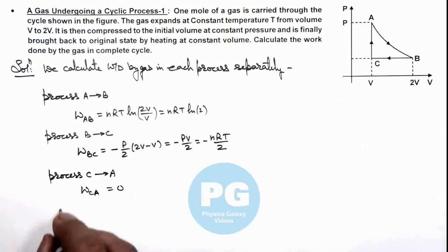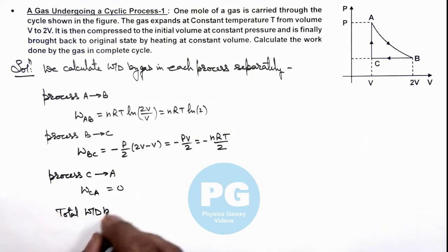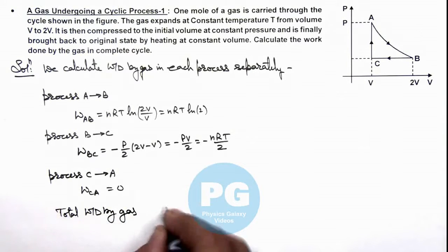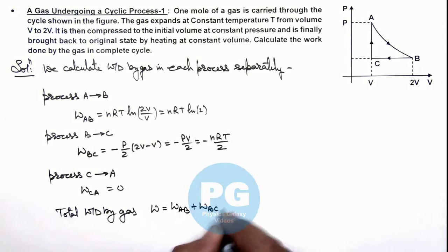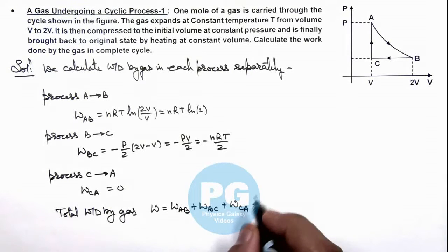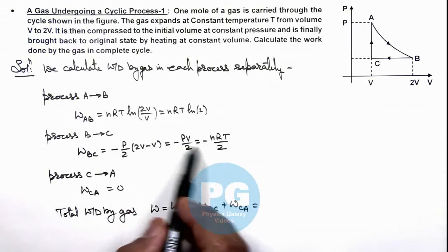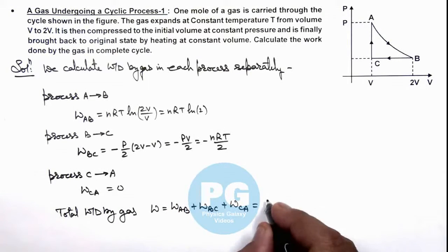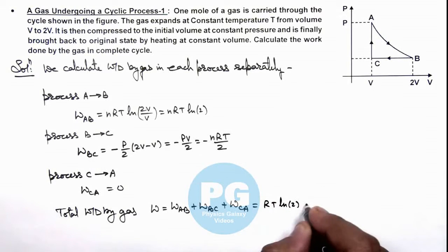The total work done by the gas can be given as W_AB plus W_BC plus W_CA. Since the number of moles is one, this equals RT ln(2) minus RT/2.